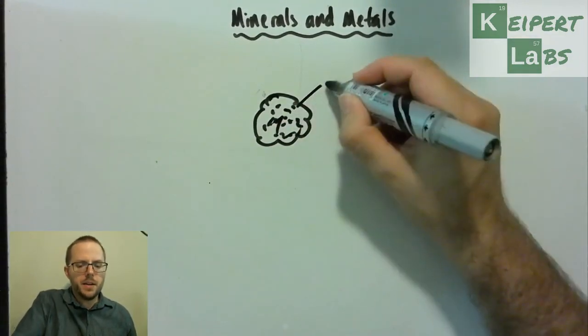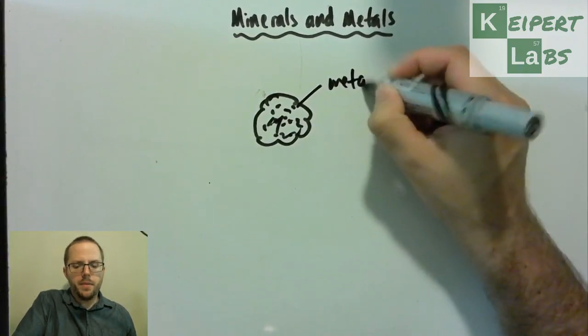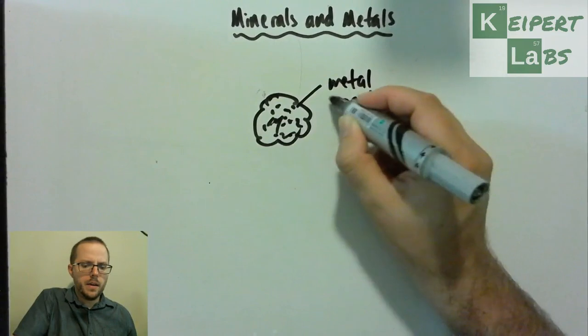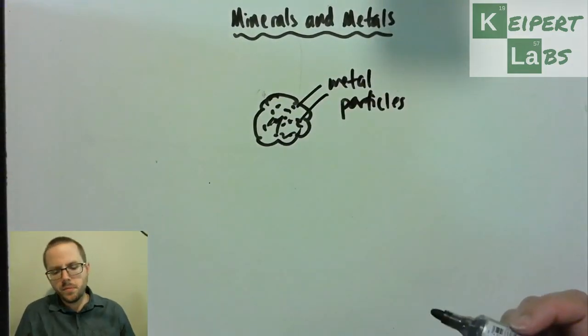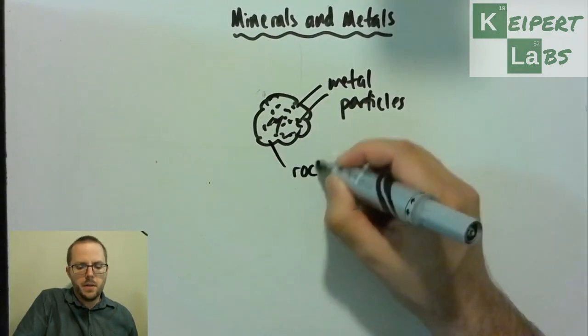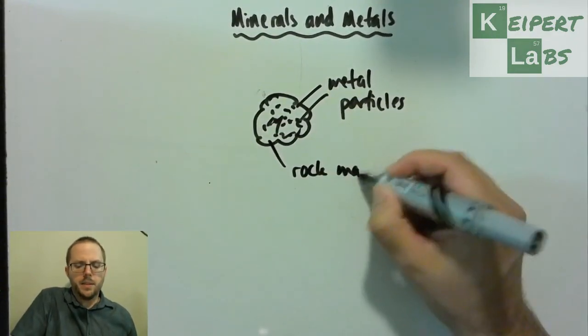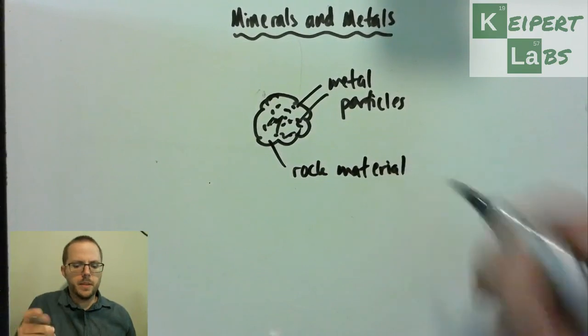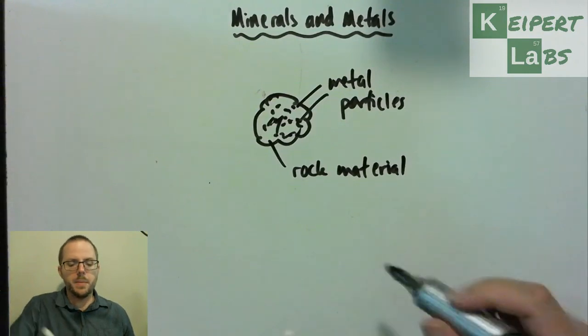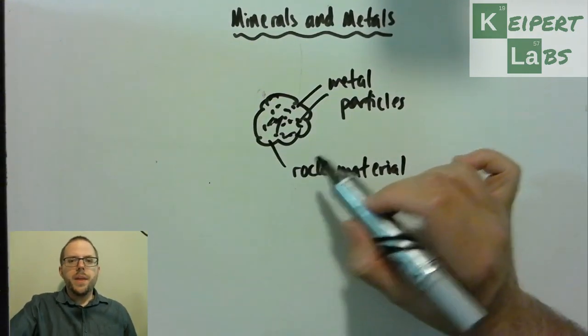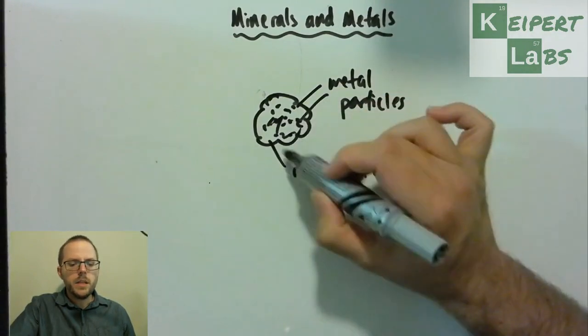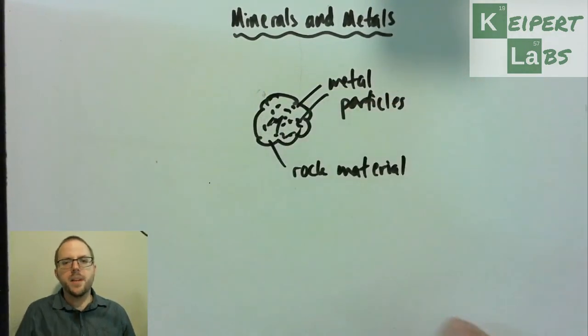But it's a rock that we dig out of the ground, and the idea is that inside it we have metal particles. That's kind of what the chalk chips is supposed to represent here. And then what we have is basically the rest is kind of rock material. This idea being that there are lots of substances that we can dig out of the ground that contain little bits of metal amongst other stuff that we don't want.